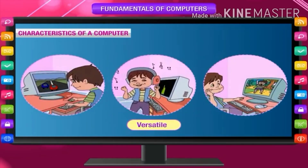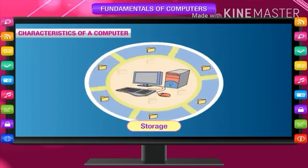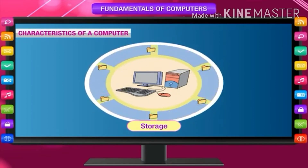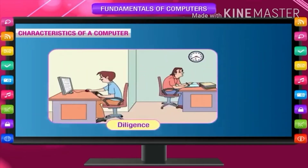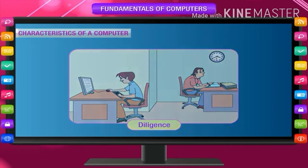Versatile: A computer is capable of doing different types of work with the same efficiency. Storage: A computer can store a large amount of data in its memory. Once stored, it never forgets, and information can be retrieved within a fraction of a second. Diligent: A computer never gets tired or bored and can work for long hours. It is an ideal machine for carrying out repetitive kinds of work.